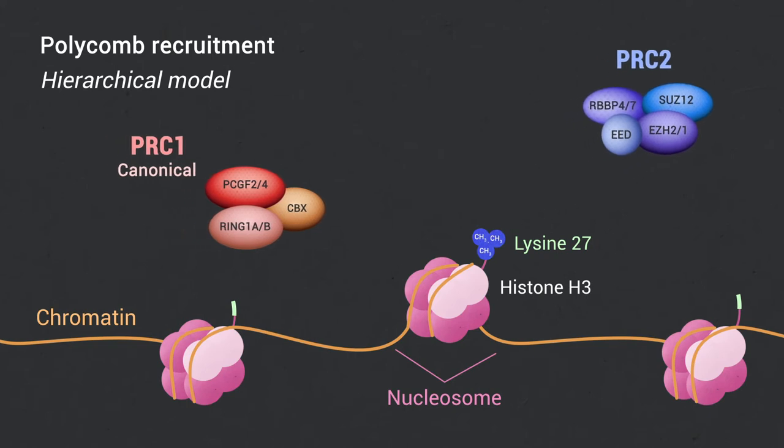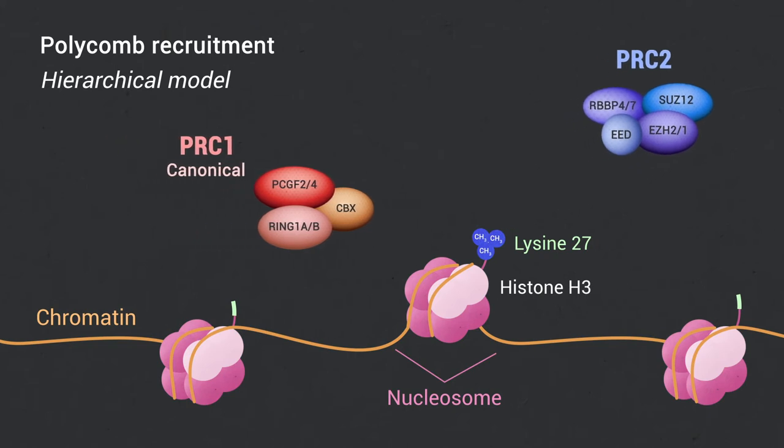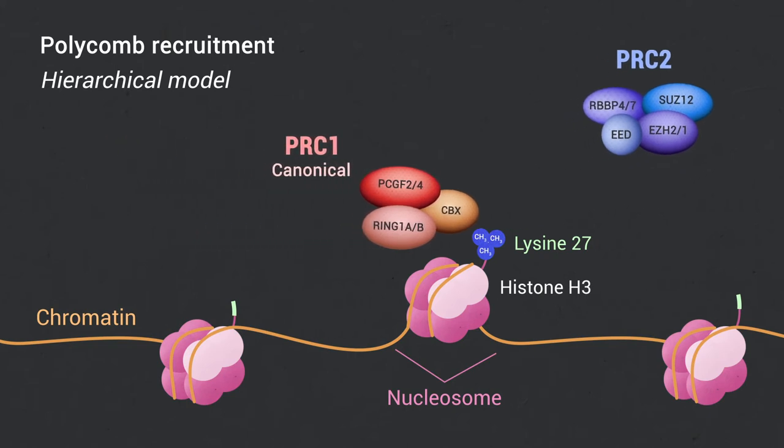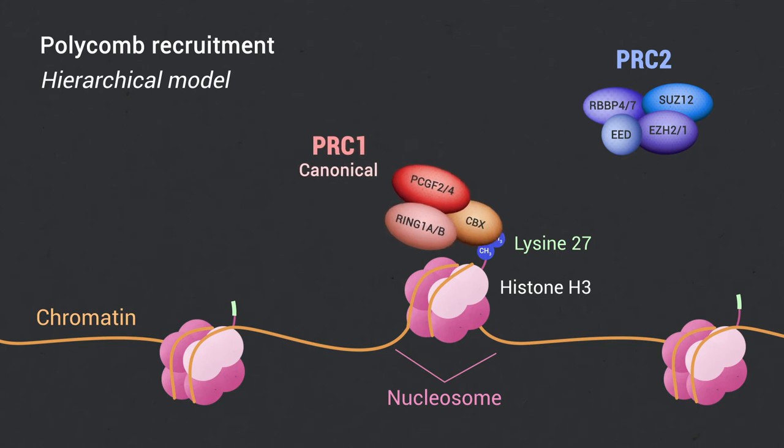This mark is subsequently used as a docking site to recruit the canonical PRC1 complex through the chromodomain of its CBX subunit.